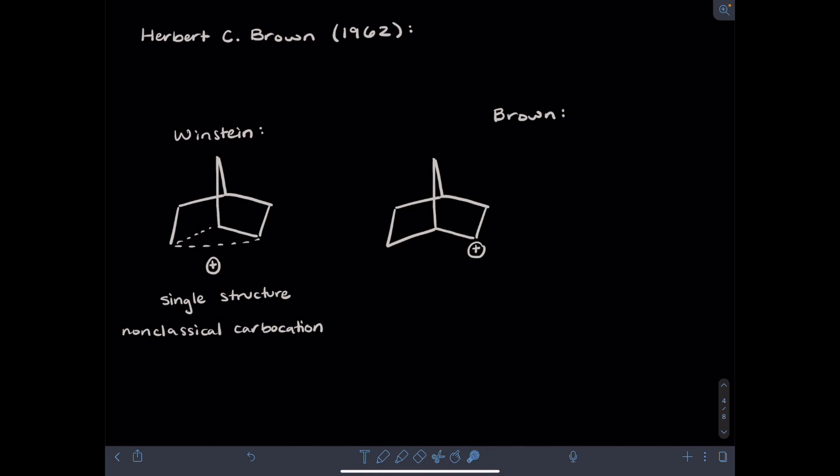He assumed that where the leaving group departed would become the carbocation initially, and then a carbocation rearrangement could take place. So taking this neighboring carbon-carbon bond and bringing those electrons to the carbocation. This rearrangement is forming a new carbon-carbon bond, and this central carbon is being deprived of electrons. So that is where the new carbocation would reside.